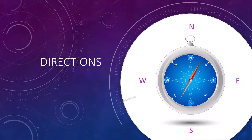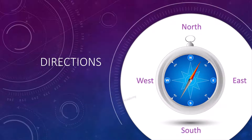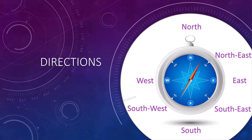North and South are directed towards the North and South poles of the Earth. The X rotation defines East and West. These points are further subdivided by the addition of four intercardinal directions — Northeast, Southeast, Southwest, and Northwest — to indicate the eight principal points. This is the eight-point compass rose.